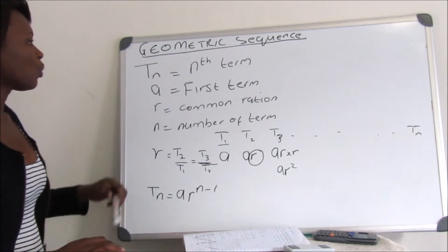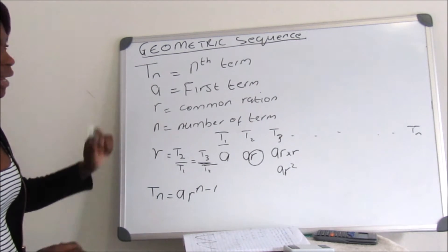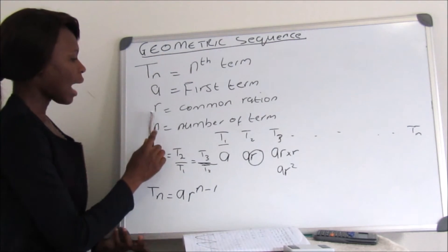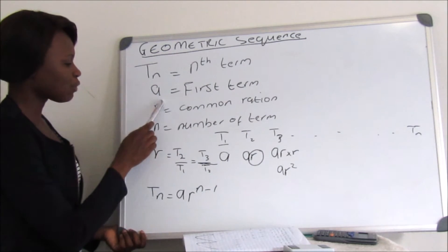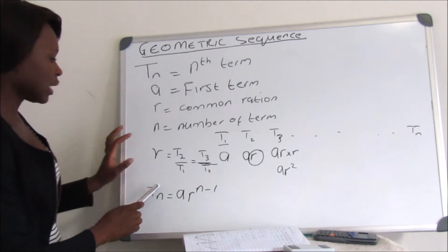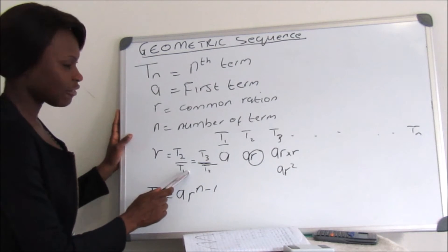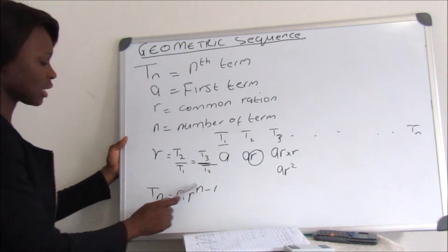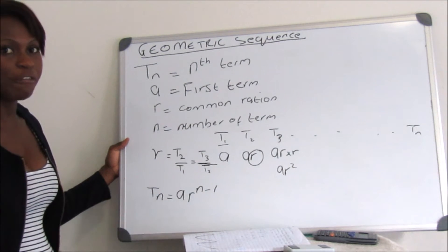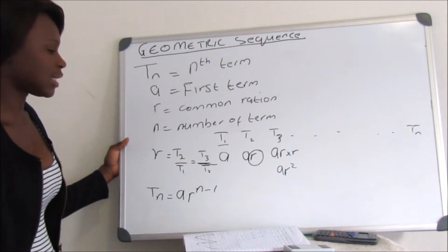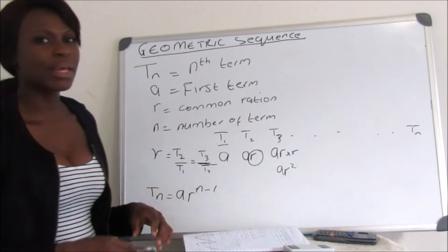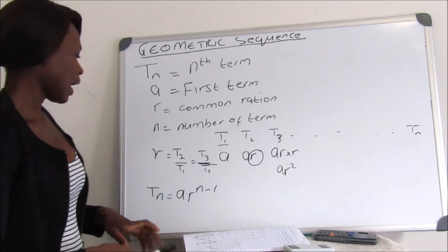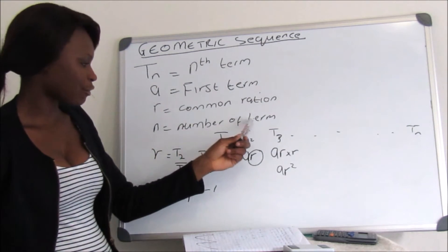Let's do a quick recap. With geometric sequence you will find terms like Tn, which is the nth term; A, which is the first term; and R, the common ratio. To find the common ratio, we use T2 divided by T1 equals T3 divided by T2 — the second calculation just confirms the answer is the same. If it's not the same, the sequence is not a geometric sequence. We also have n, which is the number of terms.